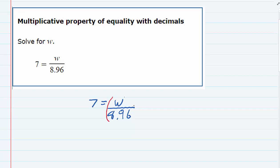So I can do that by doing the opposite, which is multiplying by 8.96. And if I multiply the right-hand side, I have to also multiply the left-hand side by 8.96.